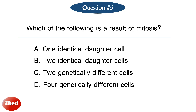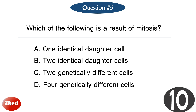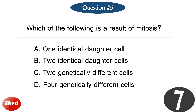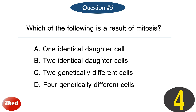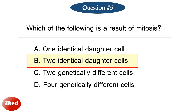Question number five. Which of the following is a result of mitosis? The correct answer is letter B: identical daughter cells.